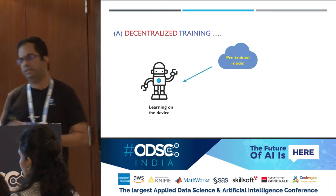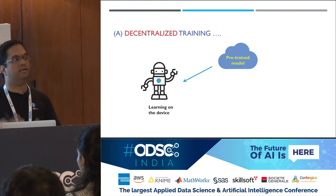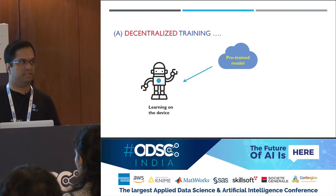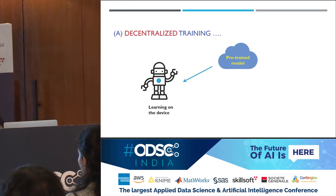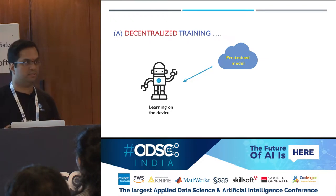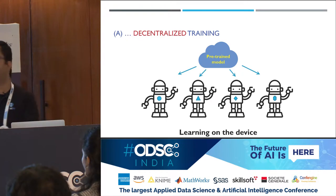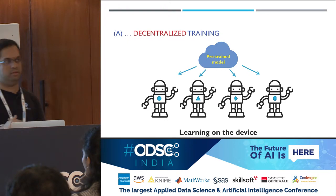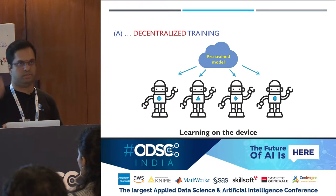Decentralized learning happens like this: when you start running on a plant or a self-driving car, the first thing you do is instantiate a model from the cloud or a central server onto the edge node. These edge nodes could be your phone, Raspberry Pis, or IoT devices — you send the pre-trained model onto the device. Based on the data generated on the device, the model gets trained locally. You can have multiple edge nodes, and all of them train based on data present on their particular device — it trains on the device, not on the cloud server.